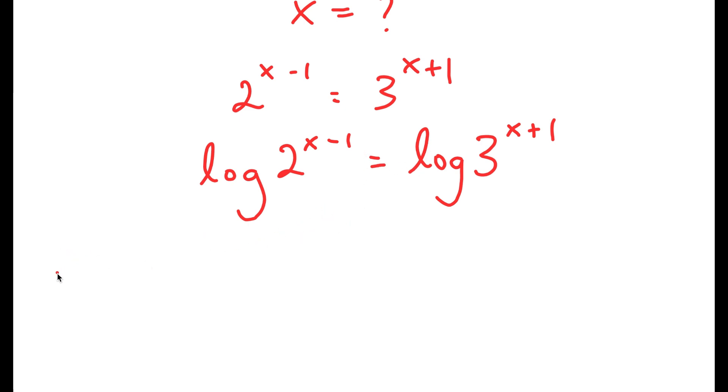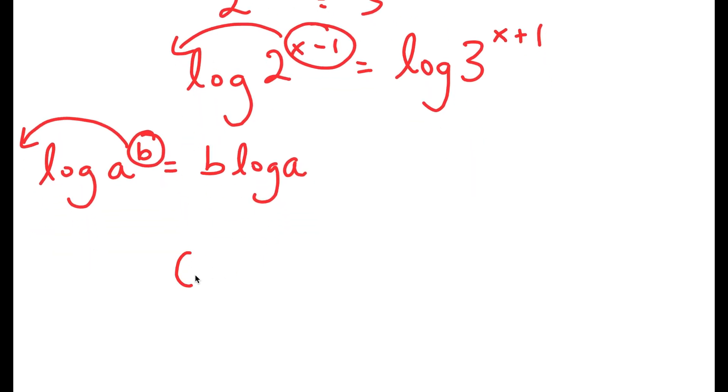Now if I have something in the form log of a to the power of b, I can move b to the front, so this turns into b times log a. In this case I have log 2 to the power of x minus 1, and I can move x minus 1 to the front. So I get x minus 1 times log 2.